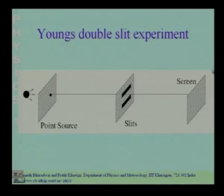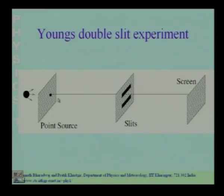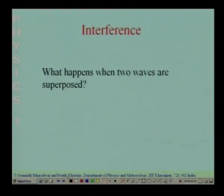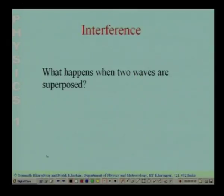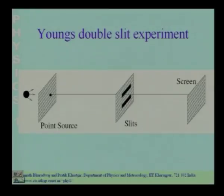We would like to study the intensity pattern on a final screen as a consequence of the light coming through these two slits — essentially the image of the two slits on the screen, which is at a large distance from the slits. The point source is at a large distance from the slit screen, and the radiation from the point source is initially spherical.